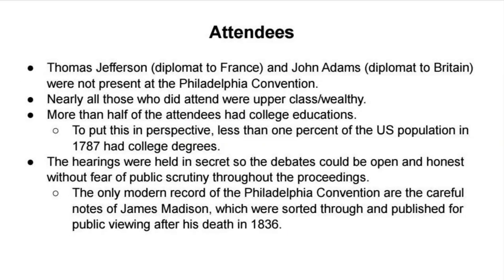Who was in attendance? Hamilton and Madison were there. Thomas Jefferson and John Adams were not — both of them were diplomats abroad; Jefferson had gone to France and Adams to Britain. Nearly all those who did attend were upper-class, wealthy people. You do not see very many lower-class citizens. More than half of the attendees had college educations, and to put this in perspective, less than 1% of the U.S. population in 1787 had college degrees. So this is the elite of the elite of society drafting the Constitution.